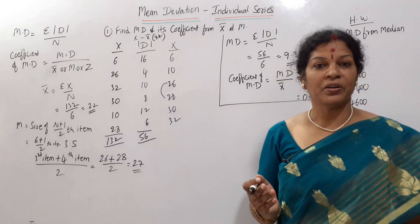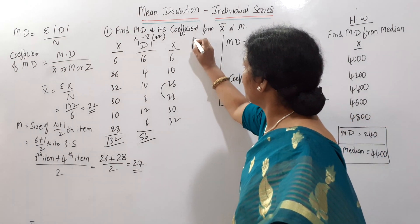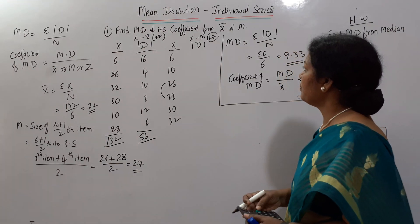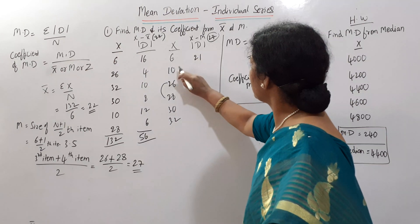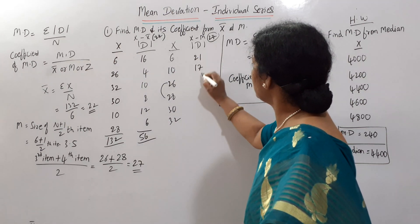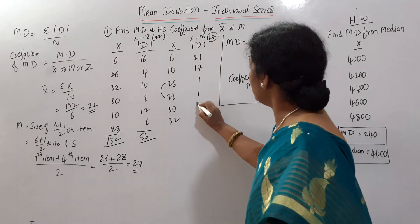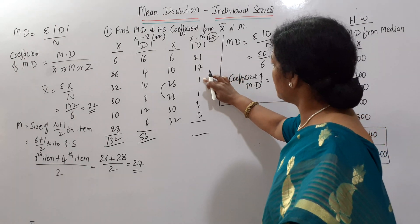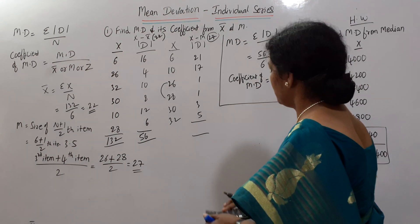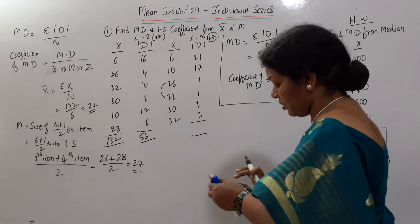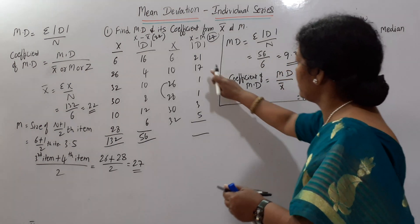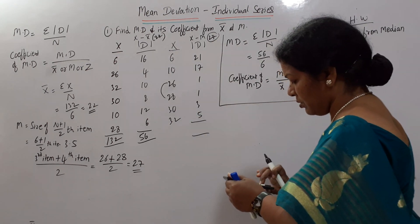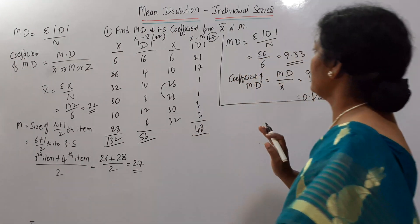Once we get the median, we take the deviations. Mod D here means X minus median, where median is 27. So: 6 minus 27 = 21. 10 minus 27 = 17. 26 minus 27 = 1. 28 minus 27 = 1. 30 minus 27 = 3. 32 minus 27 = 5. Totalling these up, σ|D| = 48.